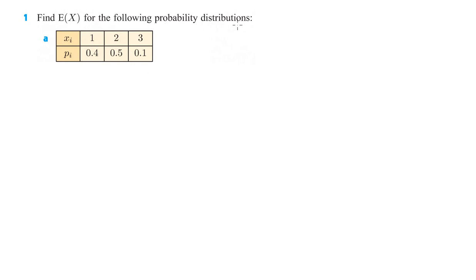Okay, find E of X for the following probability distributions, and remember that E stands for the expected value. So that means 0.4 of the time we are expected to get a value of 1.